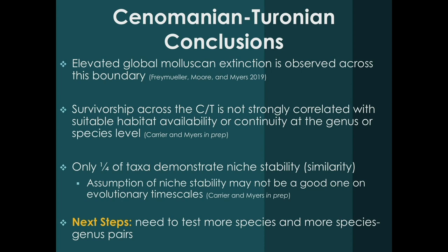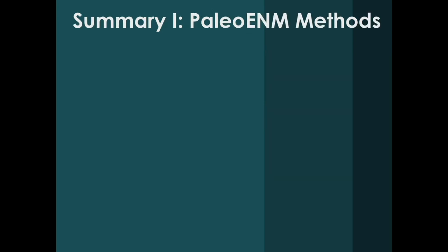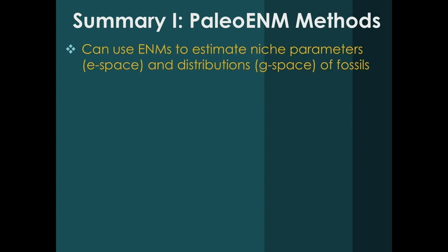What do we take away? Global molluscan extinction is elevated across this boundary. Survivorship does not seem to be strongly correlated with suitable habitat availability or its continuity, suggesting extinction potential is more proximally based on the anoxic event itself. Only about a quarter of taxa demonstrated niche stability, and all of those showed niche similarity rather than equivalency. This suggests the standard assumption that species have stable niches across their lifetimes — important for so many hypothesis tests — may not be particularly accurate when looking at evolutionary timescales across a species' lifetime.